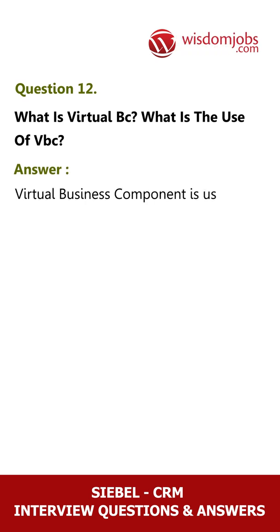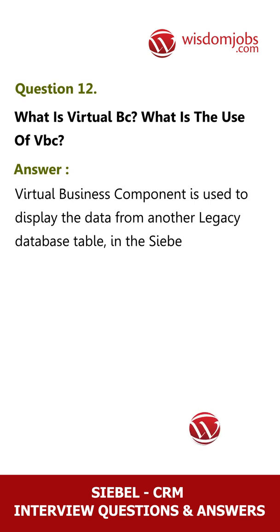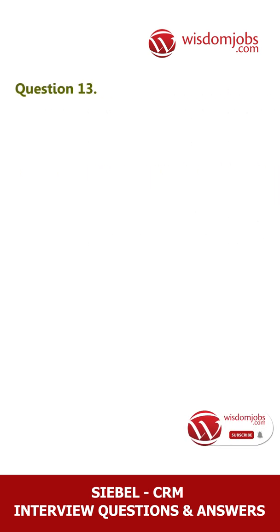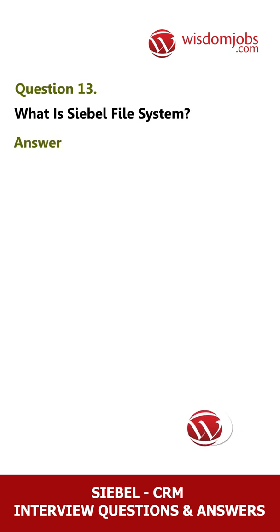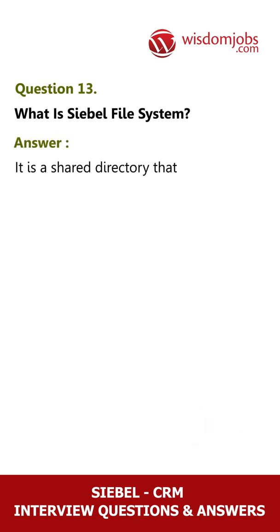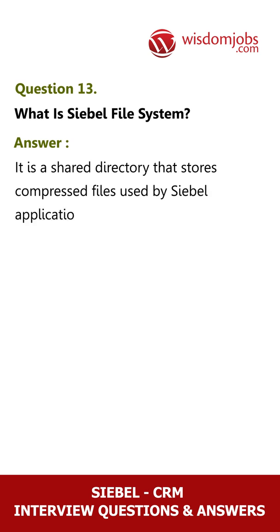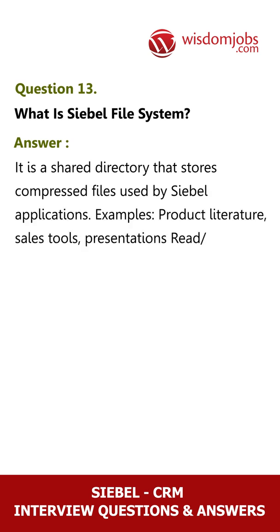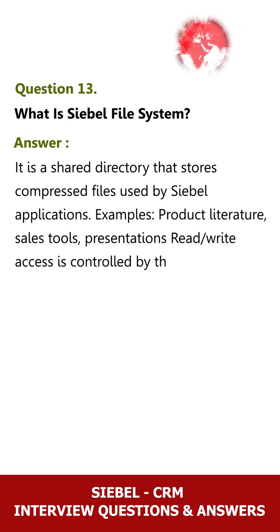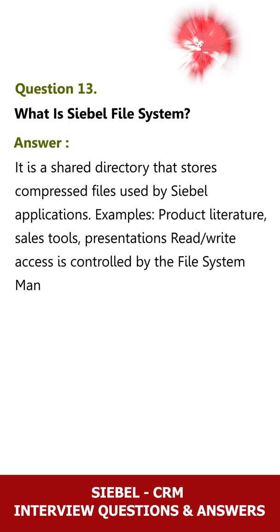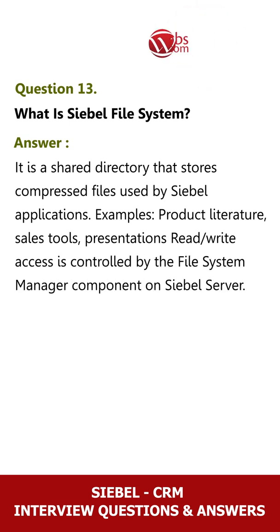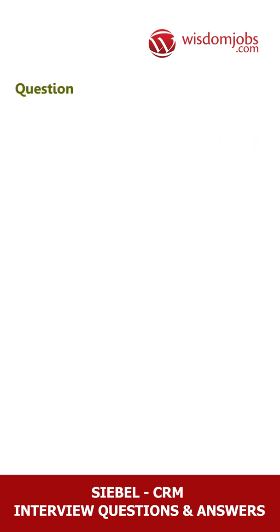Question 12: What is a virtual BC and what is its use? Answer: A virtual business component (VBC) is used to display data from another legacy database table in the Siebel screen. Question 13: What is the Siebel file system? Answer: It is a shared directory that stores compressed files used by Siebel applications — examples include product literature, sales tools, and presentations. Read/write access is controlled by the file system manager component on the Siebel server.